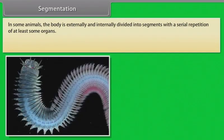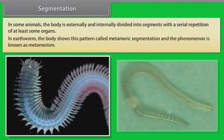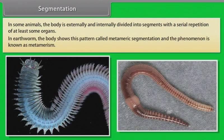Segmentation: In some animals, the body is externally and internally divided into segments with a serial repetition of at least some organs. In earthworm, the body shows this pattern called metameric segmentation, and the phenomenon is known as metamerism.